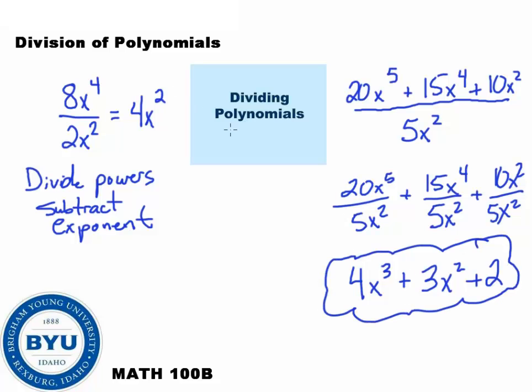So when dividing polynomials, you want to split up each of the top parts of the polynomial and divide it by what you're dividing by.